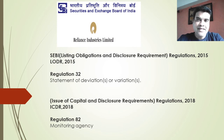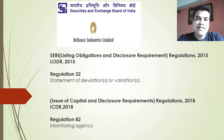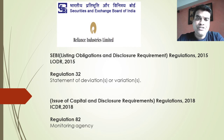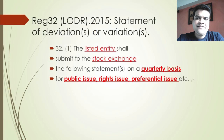In the SEBI LODR, that is the Listing Obligations and Disclosure Requirement Regulations, we will look specifically at Regulation 32, which talks about the statement of deviations or variations. In the ICDR Regulations, that's the Issue of Capital and Disclosure Requirement Regulations 2018, we will look at Regulation 82, which deals with a monitoring agency. Both these regulations — Regulation 32 and Regulation 82 of the ICDR — are interconnected and therefore we will look at them in greater detail.